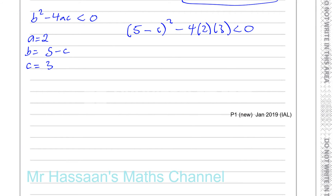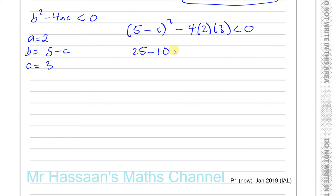Expanding the bracket: (5 minus c) squared gives 25 minus 10c plus c squared, and 4 times 2 times 3 gives 24. So we have c squared minus 10c plus 25 minus 24 less than 0, which simplifies to c squared minus 10c plus 1 less than 0.